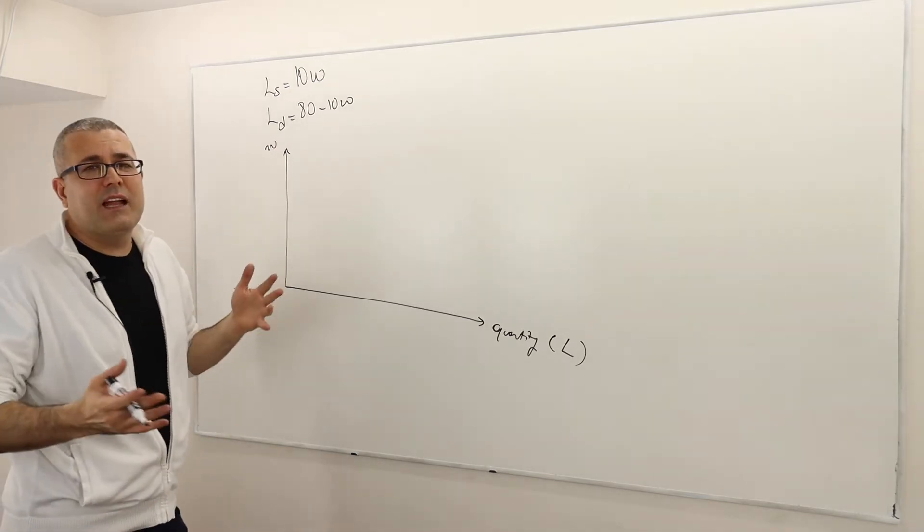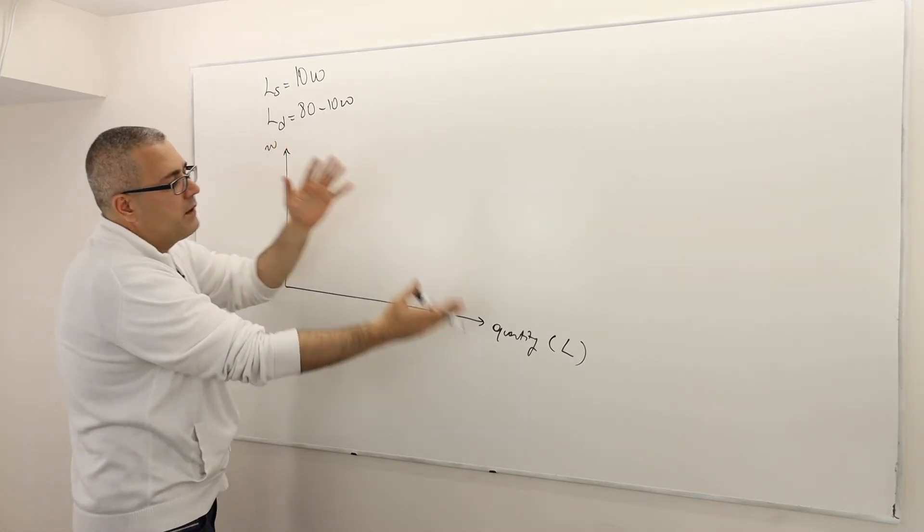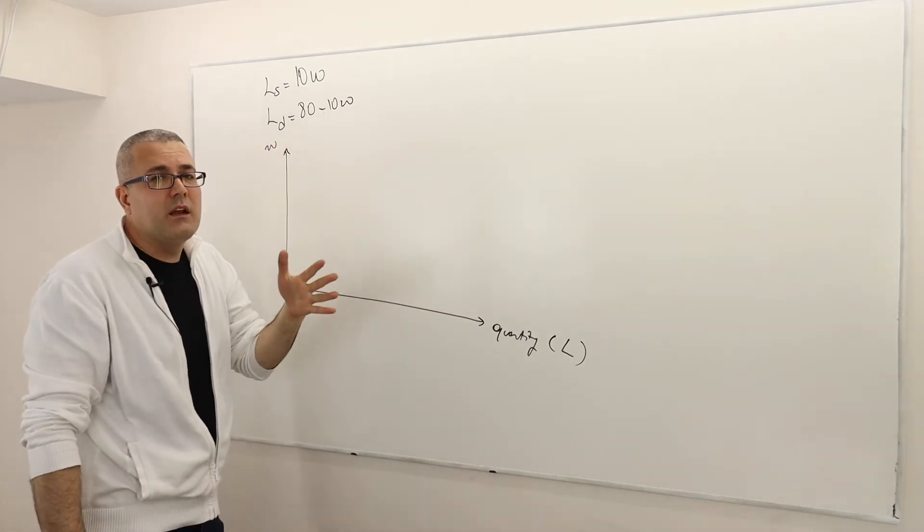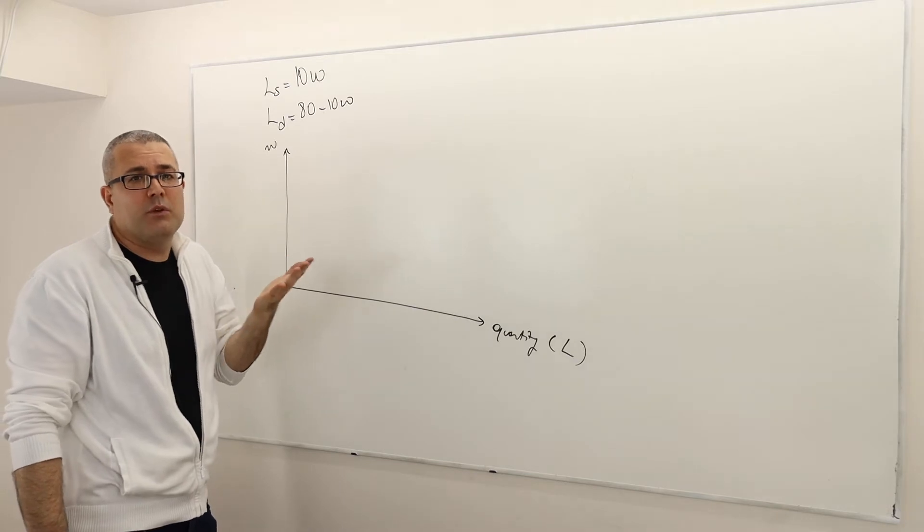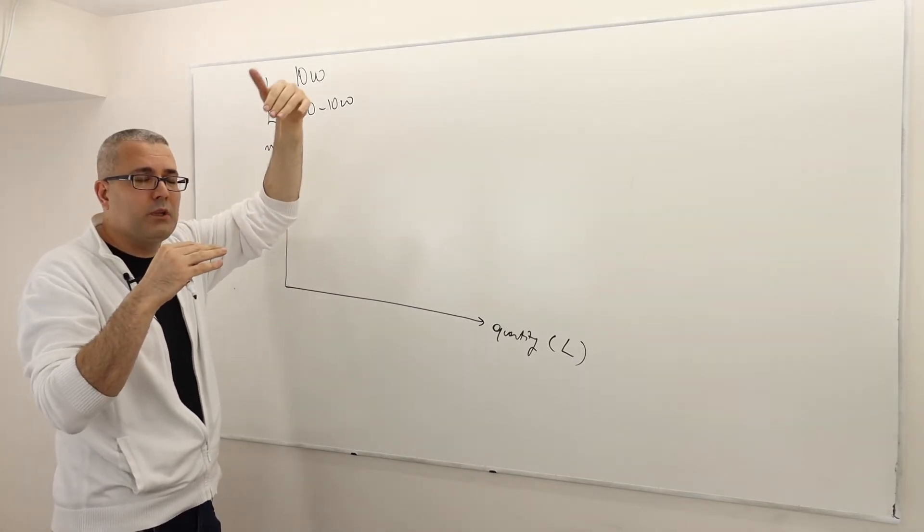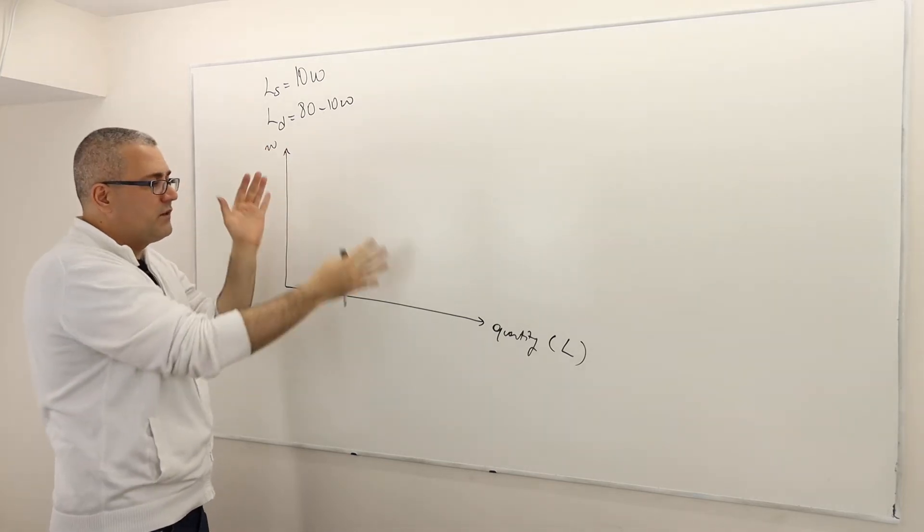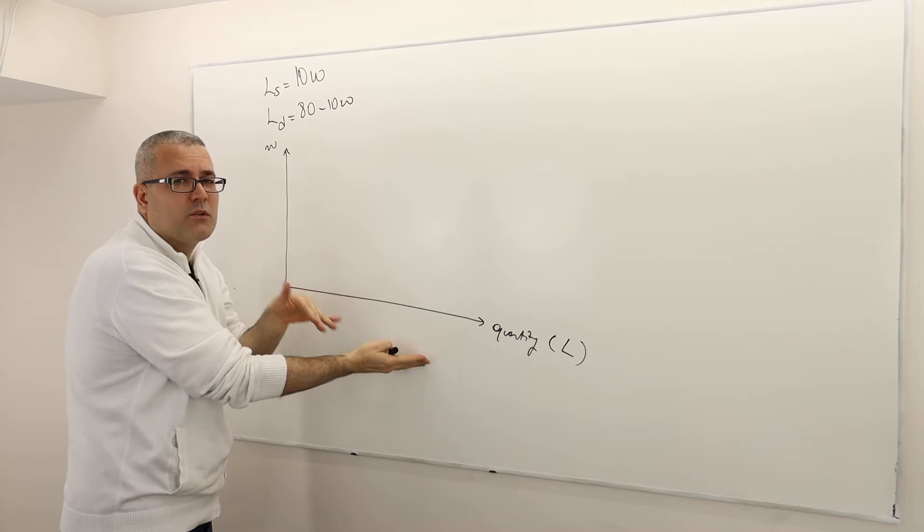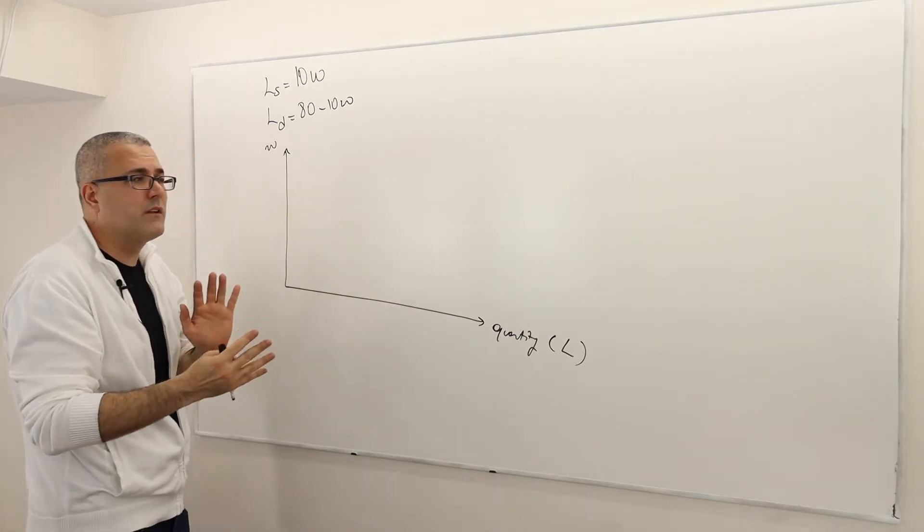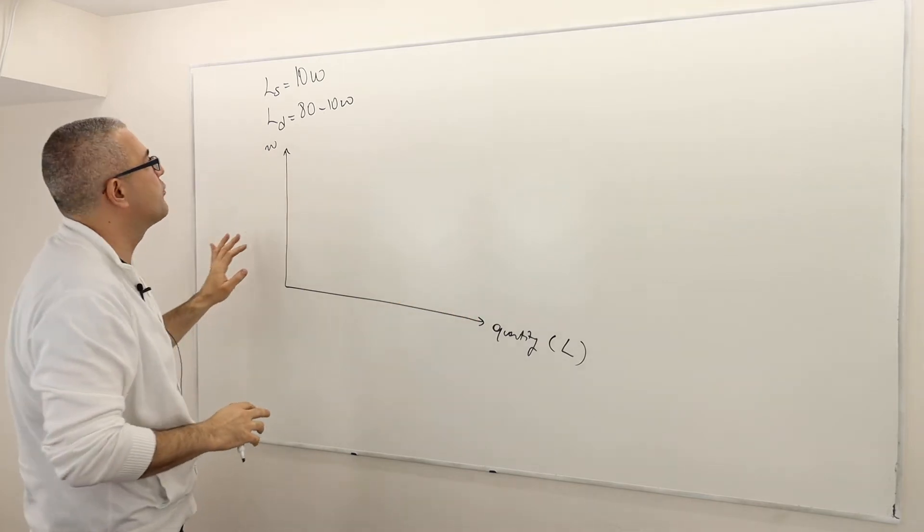By the way, everything, the analysis would be very similar if you put quantity here, wage here. But then the surplus, for example, wouldn't be the area below the demand curve and above the price line. Because the price is going to be now on the horizontal axis. So you have to be very careful about where you put quantity and where you put the price.